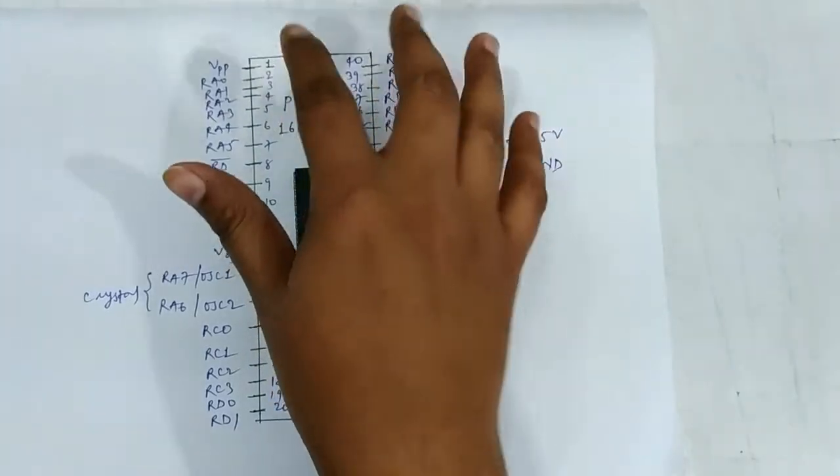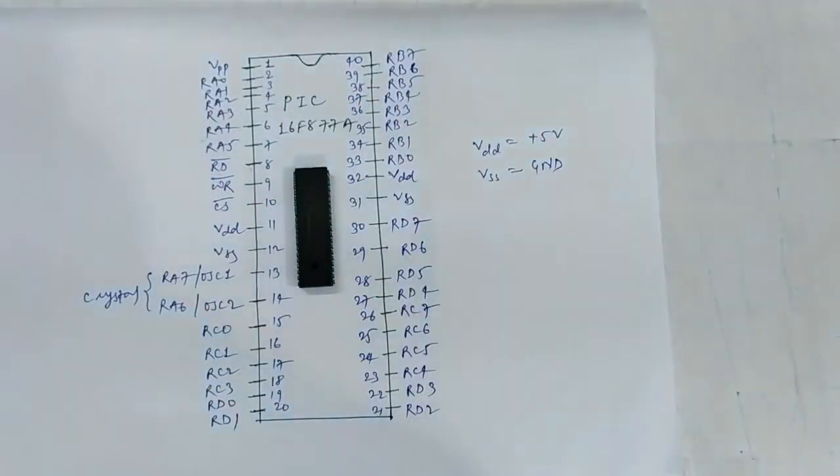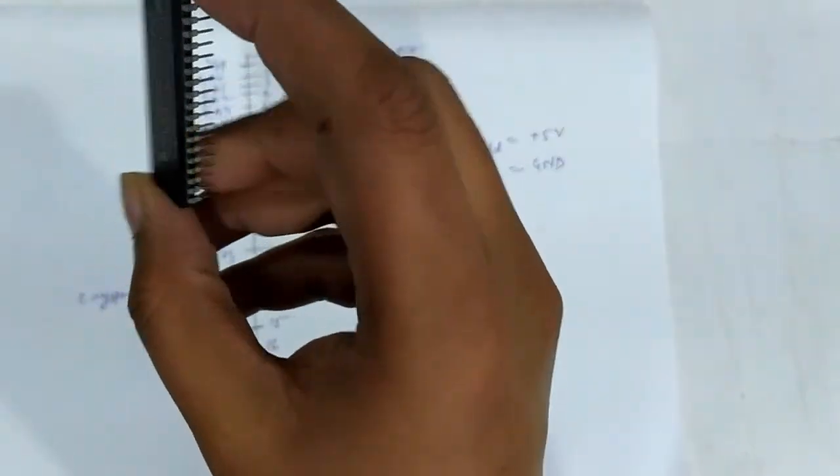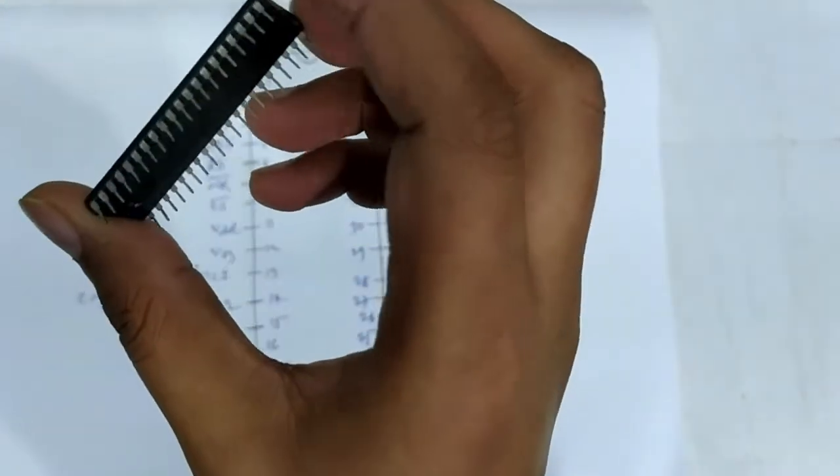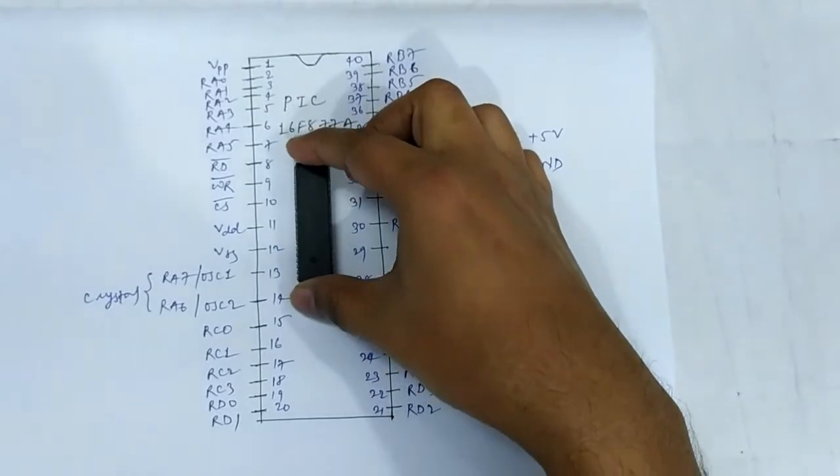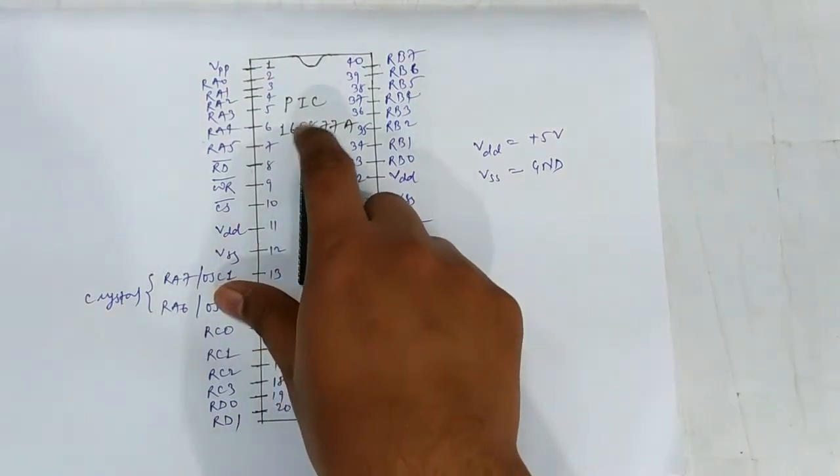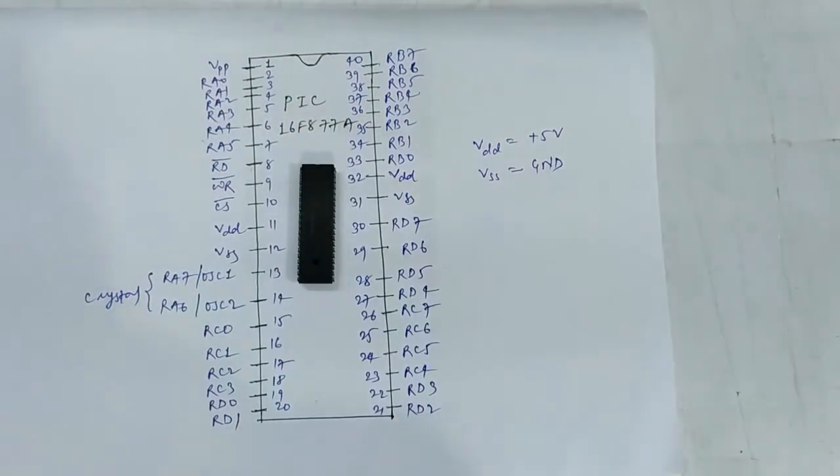First, let me explain what this is. As you can see here, this is a 40-pin microcontroller. The F in PIC16F stands for flash memory. It works on RISC architecture.